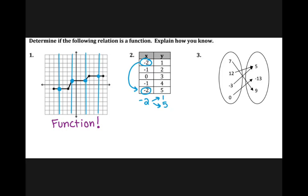Same thing for my negative 1's — my negative 1's both have two outputs. My input of negative 1 has an output of 2 as well as an output of 4. So this table does not represent a function because my inputs of negative 2 and negative 1 have two outputs.